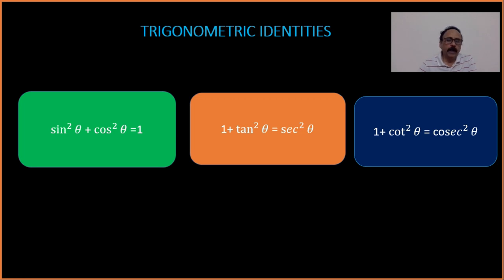For example, if you take θ = 0°, the first term sin²0° becomes 0, and cos²0° = 1² = 1, so the value is 1. It is also valid for θ = 45°: sin45° = 1/√2, so (1/√2)² = 1/2. And cos45° = 1/√2, so cos²45° = 1/2 as well. Half plus half equals 1.